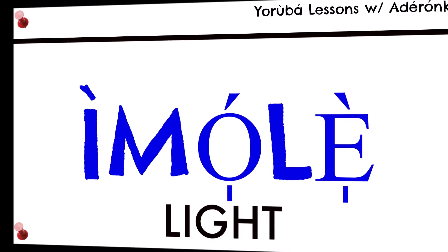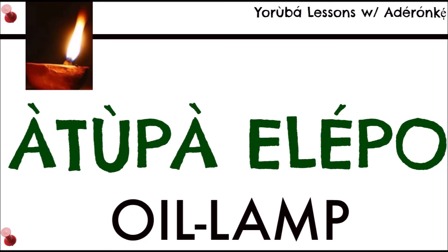Before electricity and other means of getting light, especially in darkness, the Yoruba people used 'àtùkpà.' There are different kinds of àtùkpà — in the oldest form, it was simply fire at the end of a stick. You make fire, put it on a stick, and you get light. That's àtùkpà.